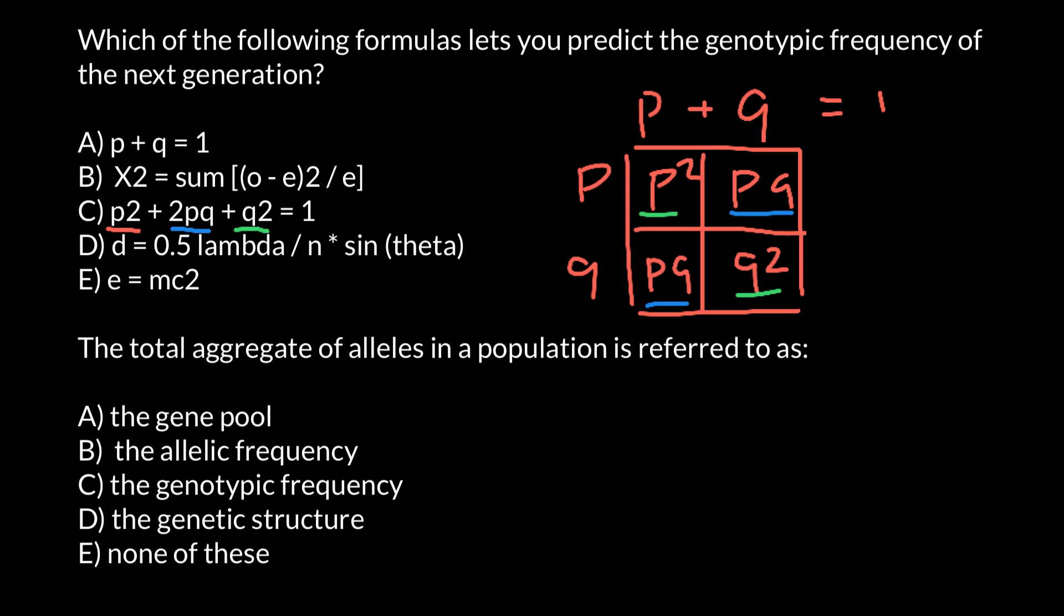I hope you already had time to read all the variants. And actually there is nothing much to explain here. You just have to remember that we refer to the aggregate of alleles in a population as a gene pool. This is answer A.